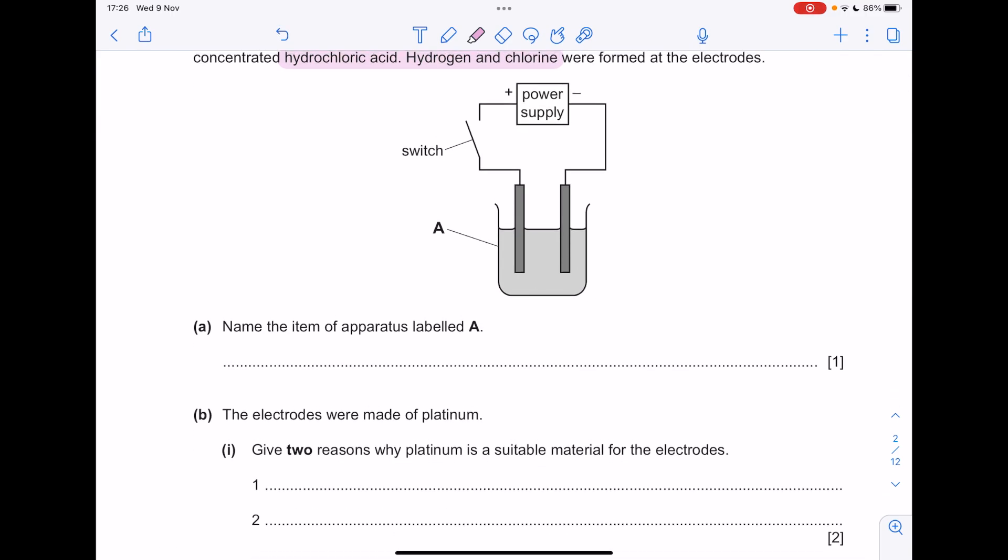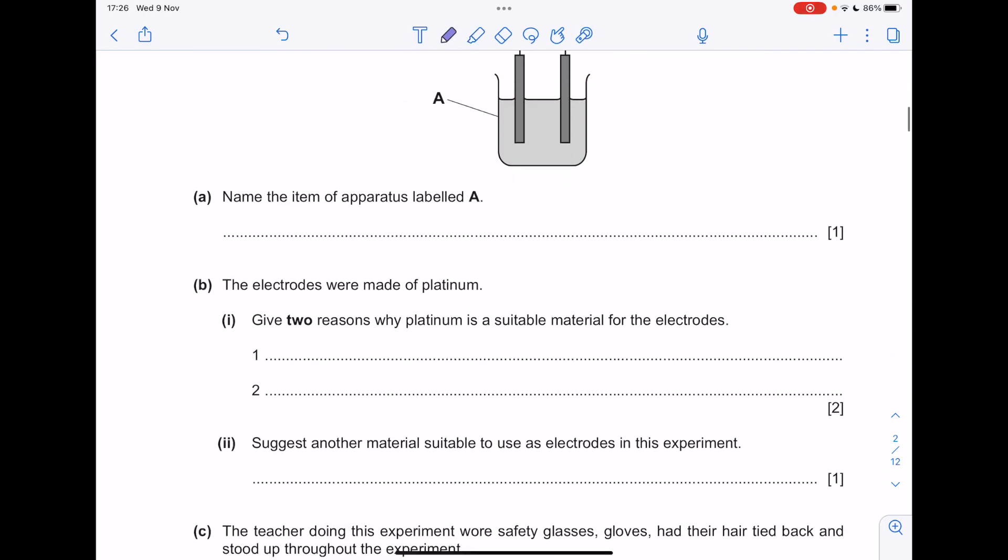Name the item of apparatus labelled A. We're kicking things off nice and straightforwardly. That is just a straightforward beaker.